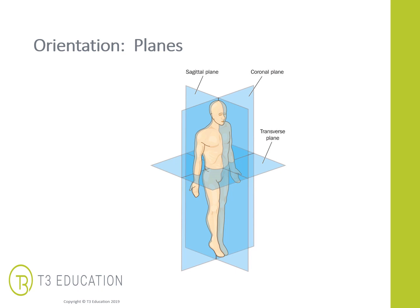Now we're going to talk about planes and structure in the body — the nomenclature for how we name structures and describe different planes. This is really useful for describing where we're working on a client, what we find, and how we communicate with other professionals. There are three planes: the coronal plane, which goes across the body splitting it into front and back; the sagittal plane, which is the side-on view splitting us in two; and the transverse plane, which splits us from top to bottom.